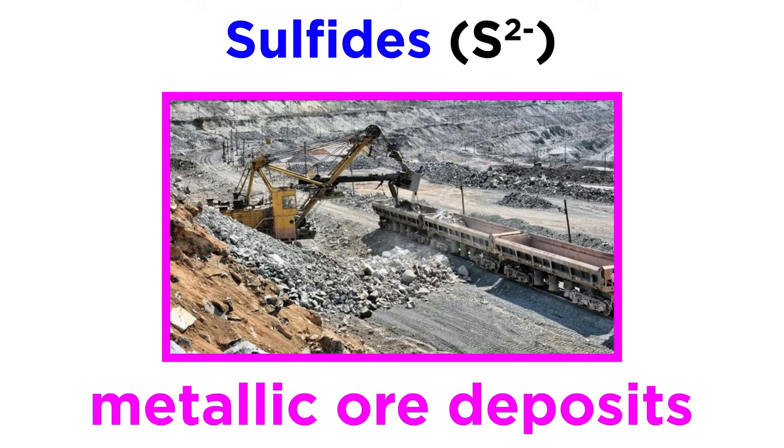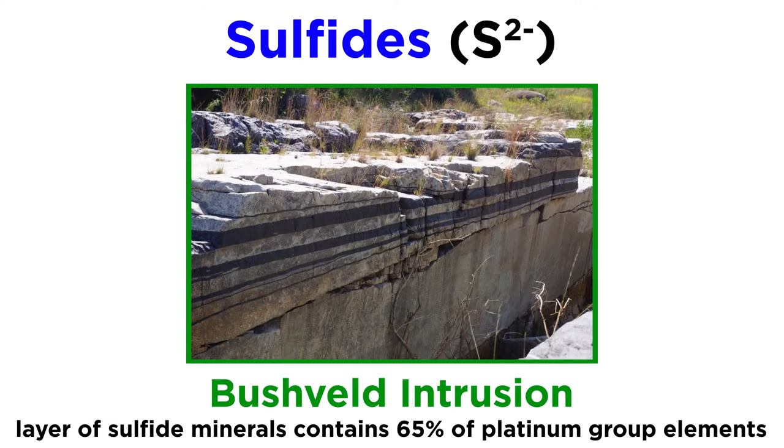Many sulfide minerals are both associated with and hosts of numerous metallic ore deposits. For example, the Bushveld intrusion, which is a large intrusive igneous formation in South Africa, possesses a layer of sulfide minerals that contain 65% of the world's reserve of platinum group elements.